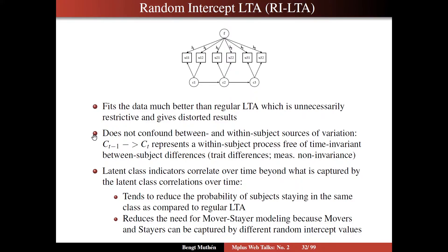By doing this, we don't have this confounding of between and within-subject sources of variation. So these transitions represent a within-subject process where we have taken out time invariant between-subject differences, which influence the outcomes but not the latent classes. By this, the latent class indicators correlate over time beyond what's captured by the latent class correlations over time. In regular LTA, you have correlation between U11 and U21 only because C1 influences C2, giving an indirect connection. But in the random intercept version, U11 and U21 also correlate because they have the common cause — the factor F.